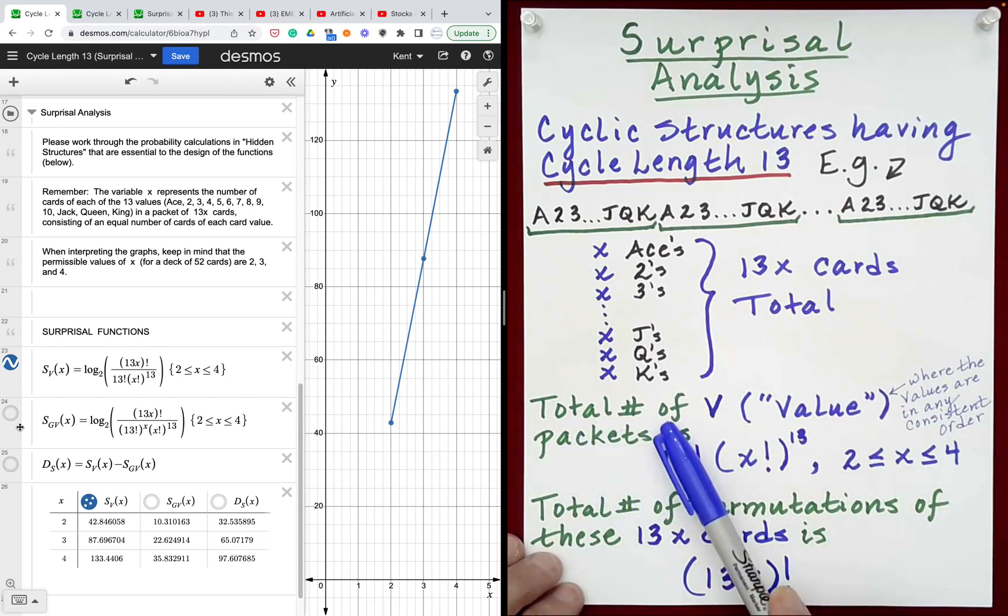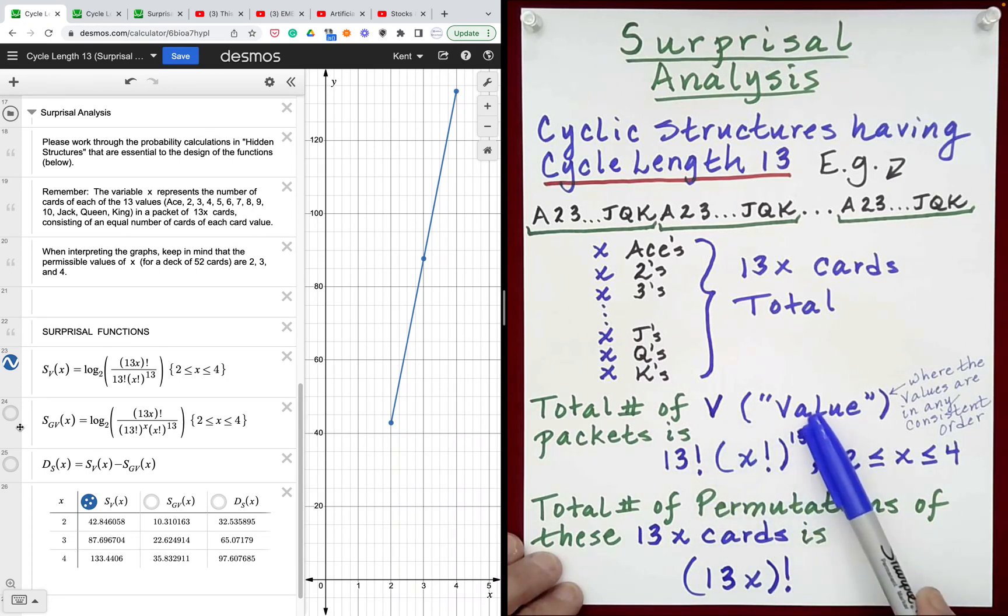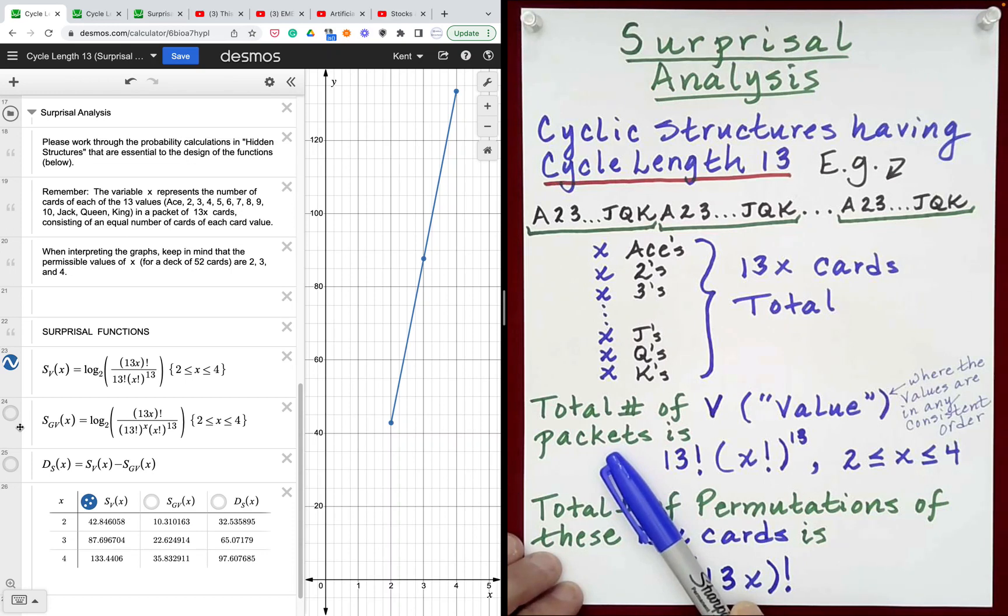The total number of v, in other words value packets, these will be packet structures that cycle through all 13 card values in some consistent fashion, is the following. It's 13 factorial multiplied by the quantity x factorial raised to the 13th power, where x can take on the values 2, 3, and 4.